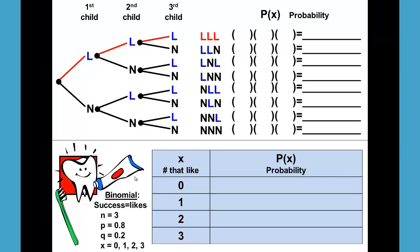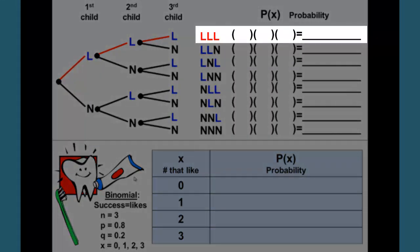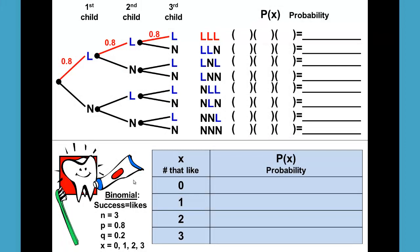Again, for the like, like, like, what are the probabilities for those? Well that would be 0.8 times 0.8 times 0.8 because the probability of liking the toothpaste is 0.8 and that gives us 0.512.